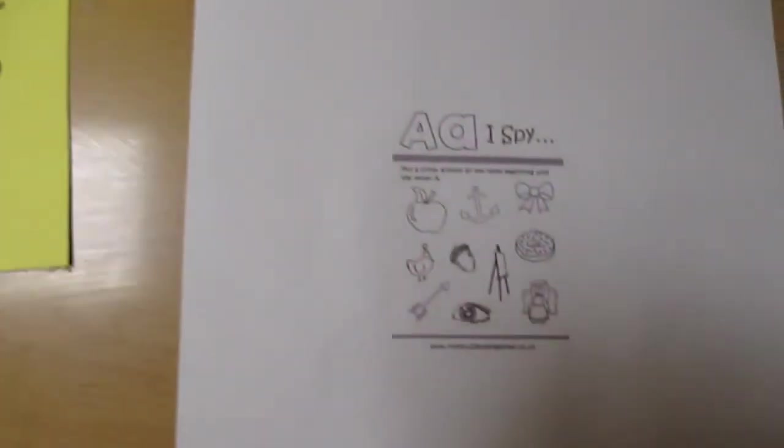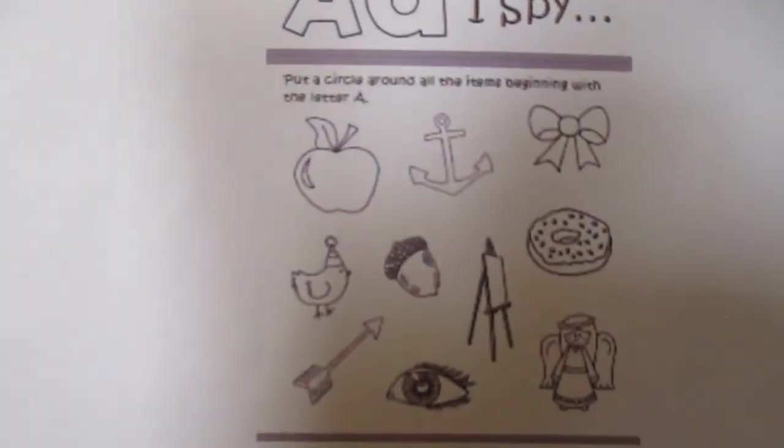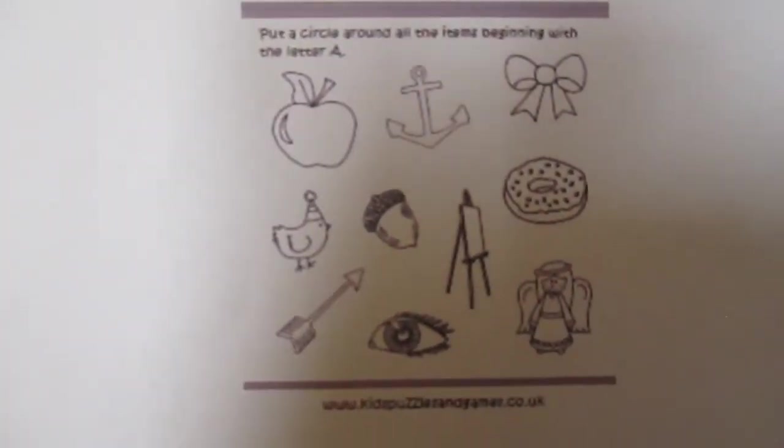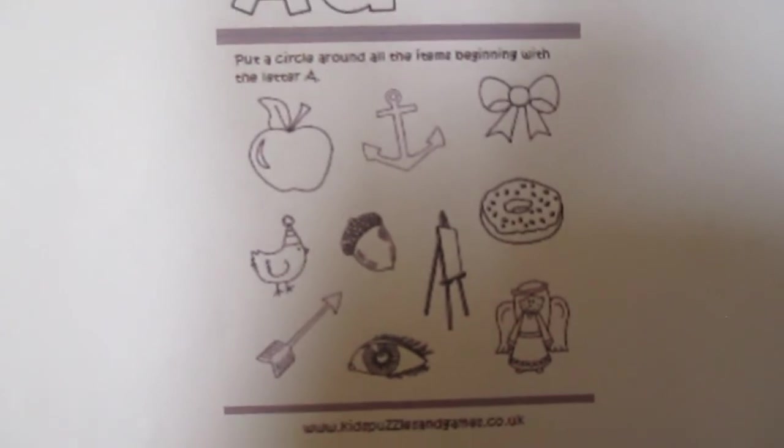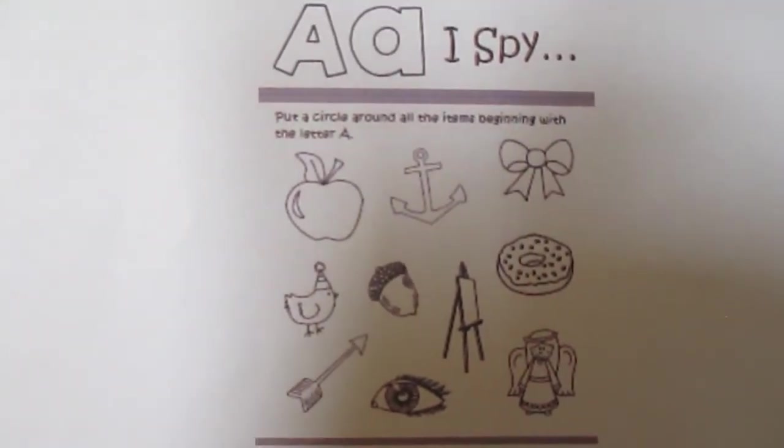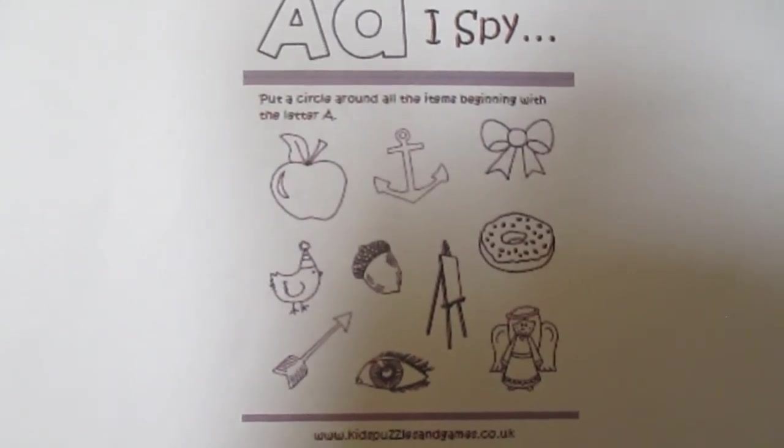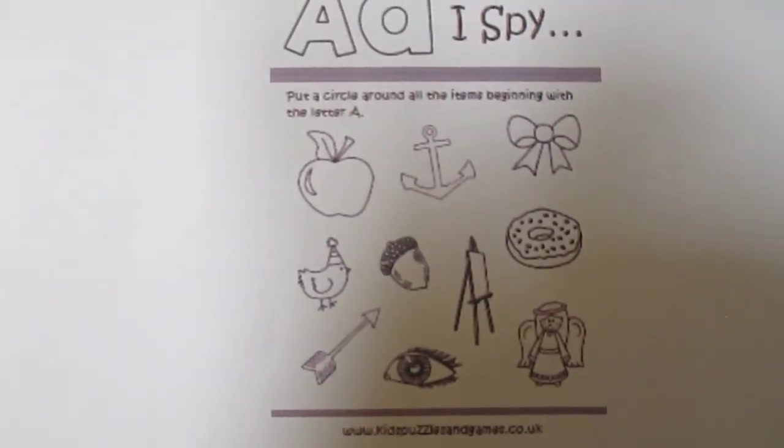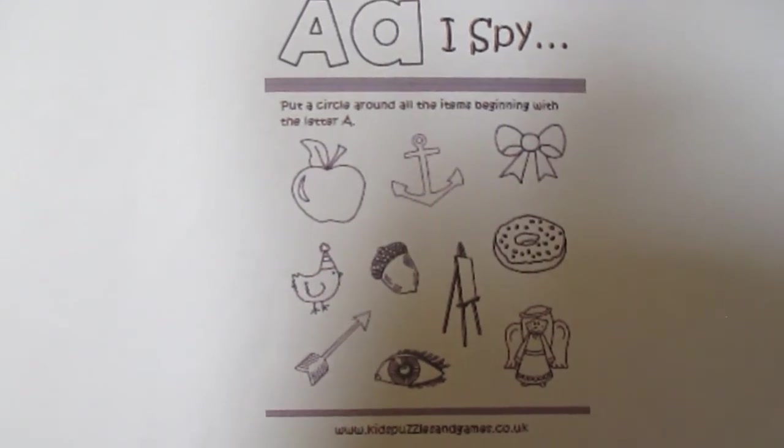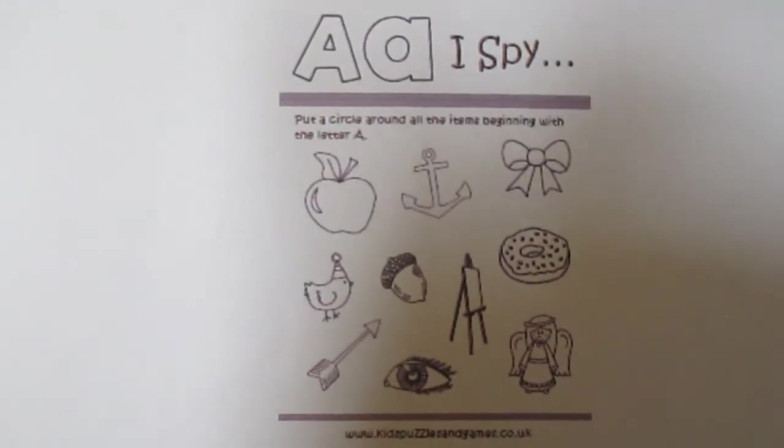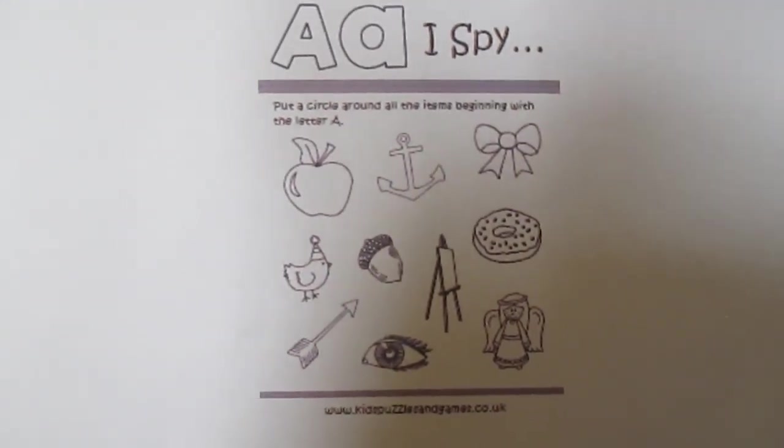To end the lesson we're going to have a look at this I spy for the letter A. There are some pictures on the page. Some of those pictures begin with the letter A or the sound 'a' and some don't. So the best thing to do is to pause the video again and think about which items begin with the A sound. Off you go.